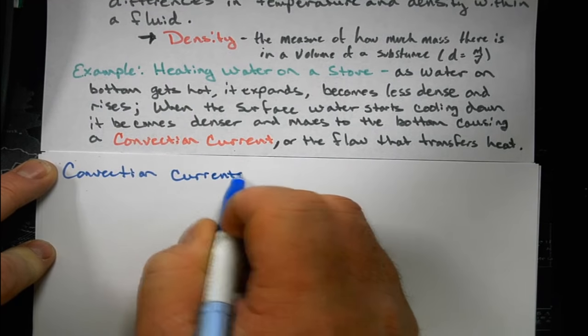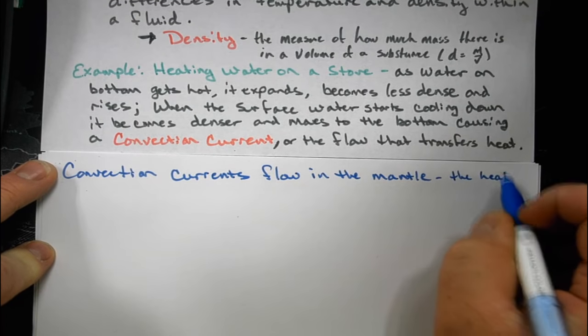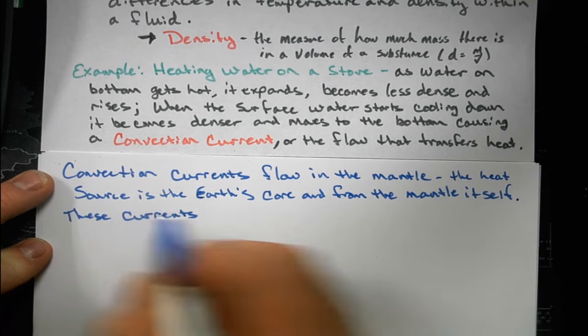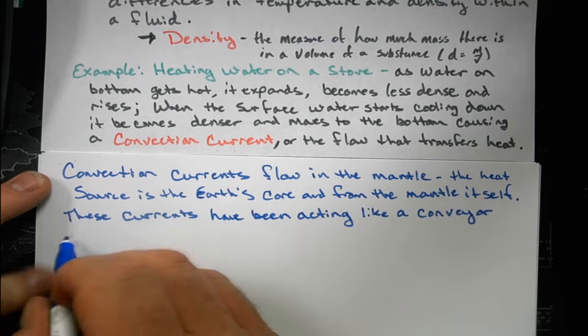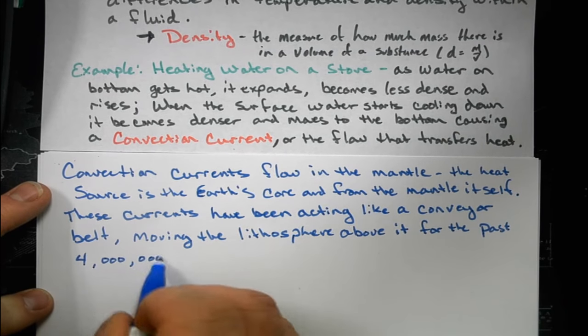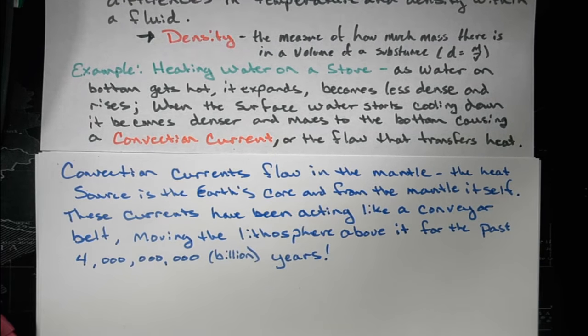These convection currents flow in the mantle. The heat source is the Earth's core and from the mantle itself. There's a lot of pressure down there and radioactive elements creating heat. These currents have been acting like a conveyor belt, moving the lithosphere above it for the past 4 billion years.